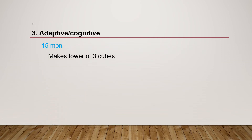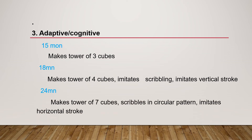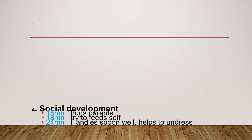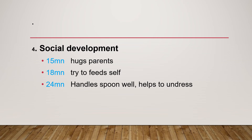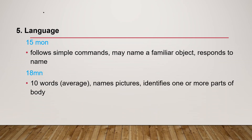Cognitive/adaptive development: at 15 months they make a tower of three cubes; at 18 months, a tower of four cubes and imitate scribbling and vertical strokes; at 24 months, a tower of seven cubes, scribble in a circular pattern, and imitate horizontal strokes. Social development: at 15 months they need assistance from parents; at 18 months they try to feed themselves; at 24 months they handle a spoon well and help to undress. Language: at 15 months they follow simple commands and name familiar objects; at 18 months they know around 10 words and identify body parts.